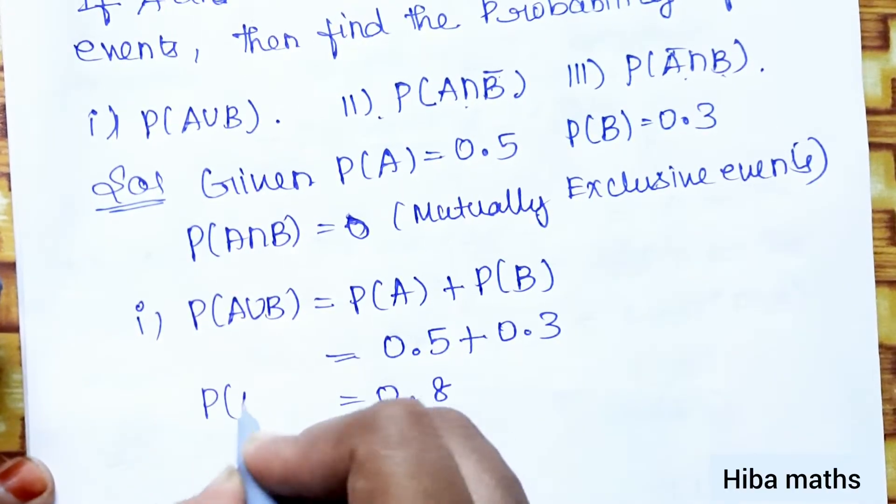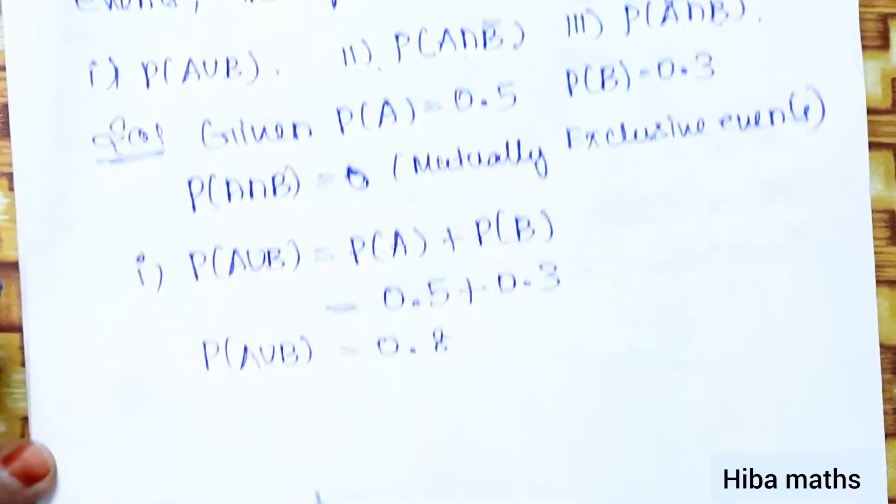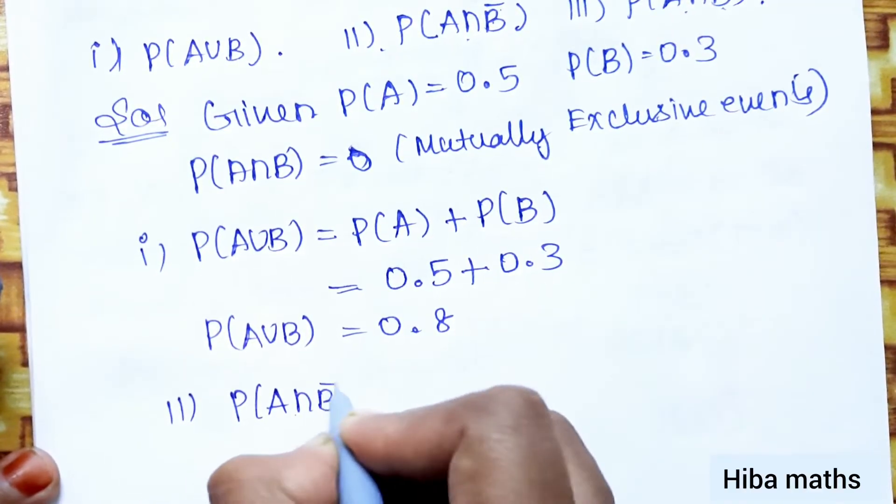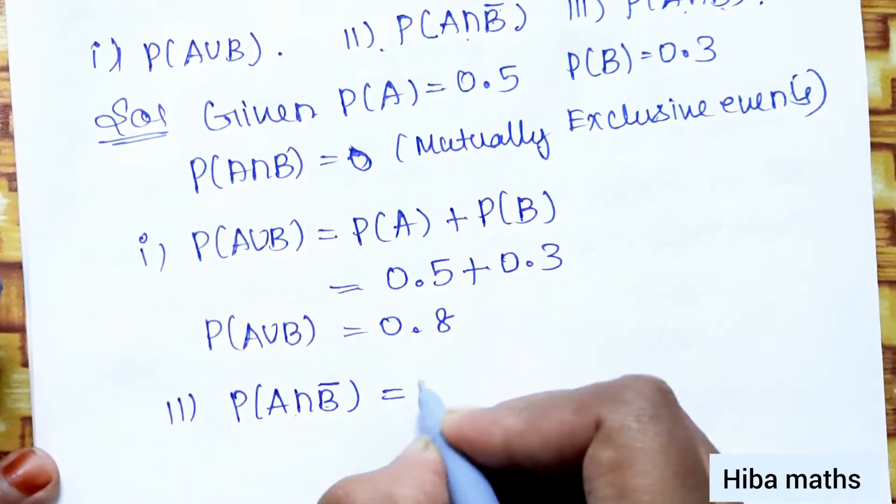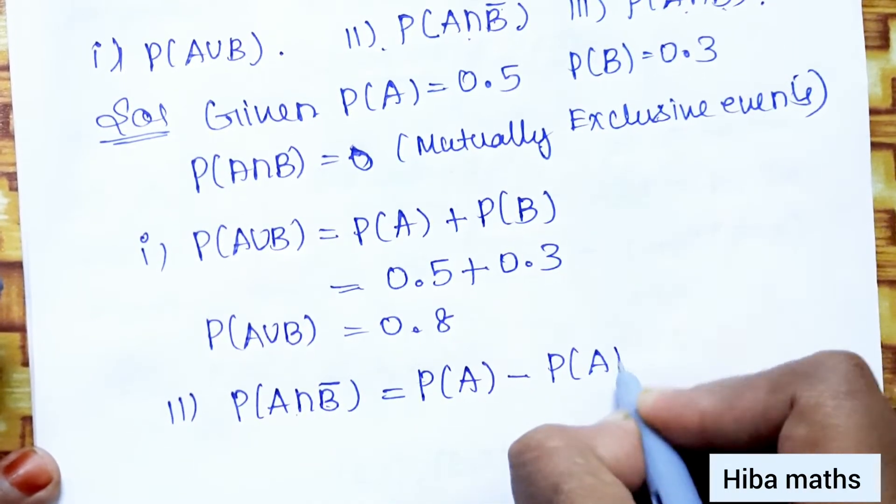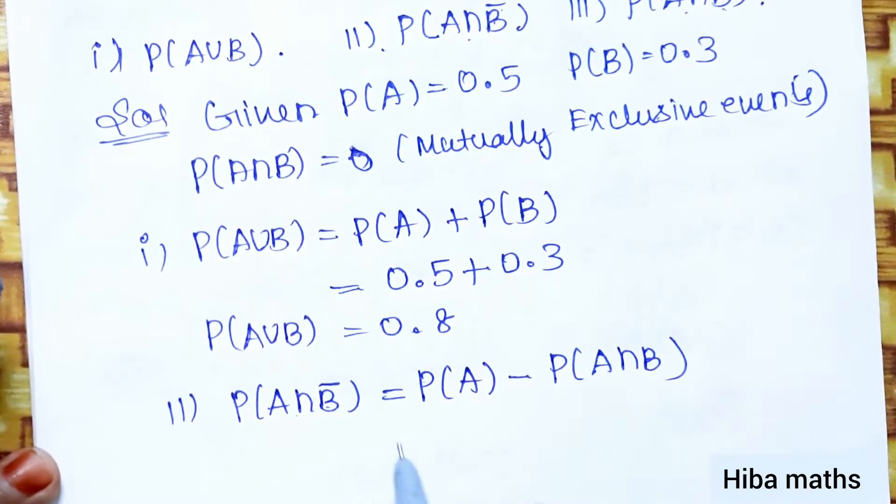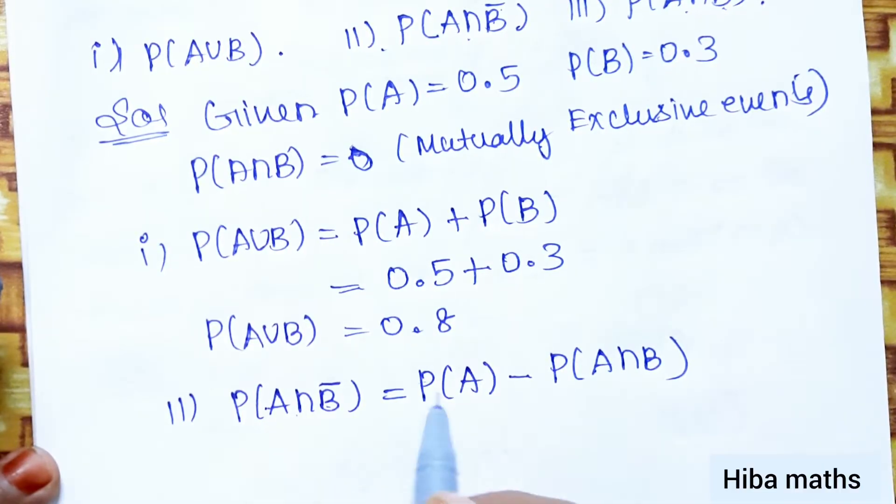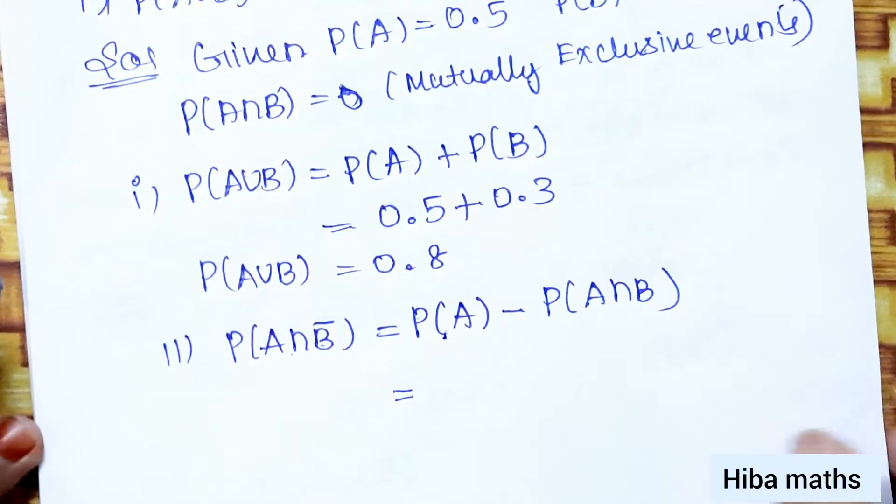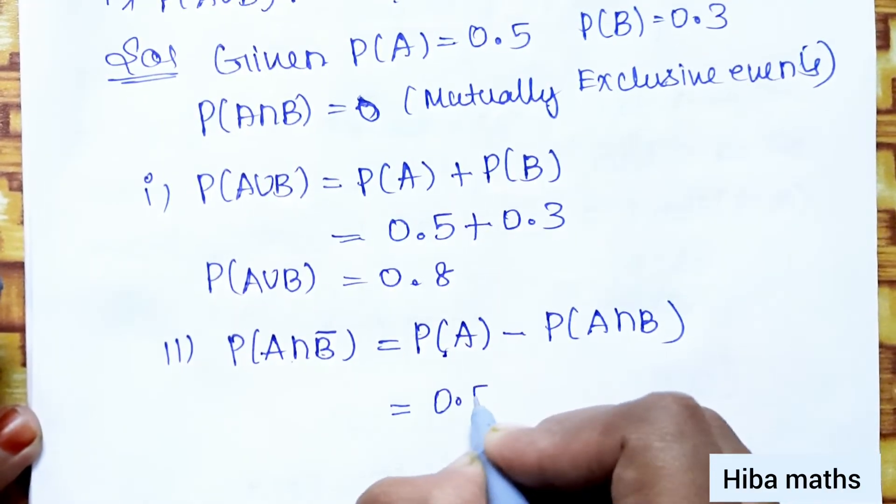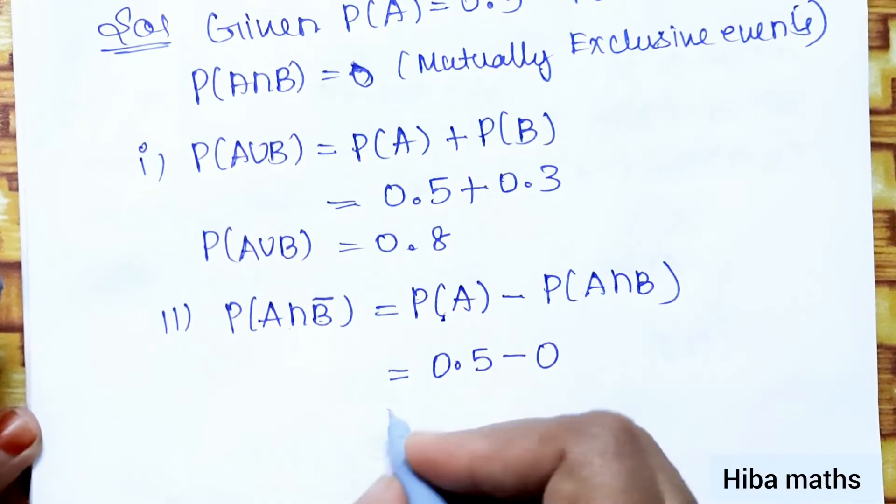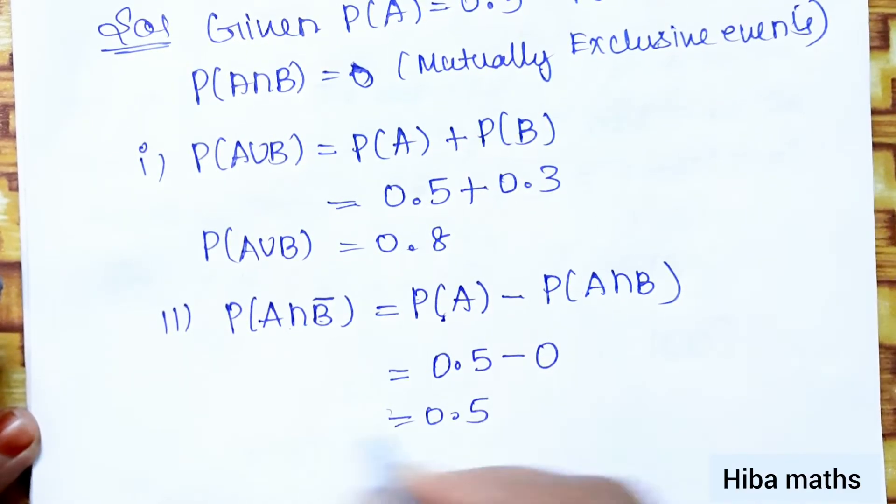That is very easy. P(A∪B). Second subdivision, P(A∩B̄). So if B̄ comes, it's P(A) minus P(A∩B), correct? P(A) value is 0.5 minus 0, mutually exclusive, so answer is 0.5.